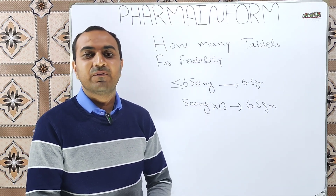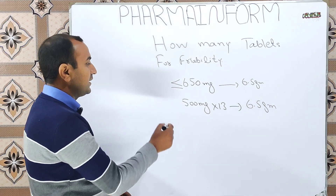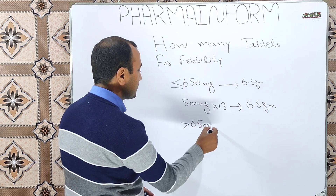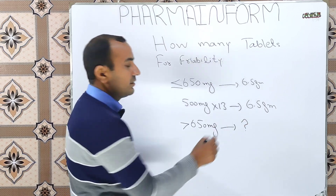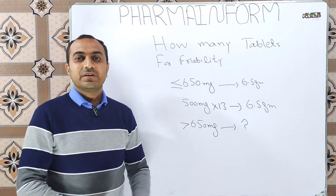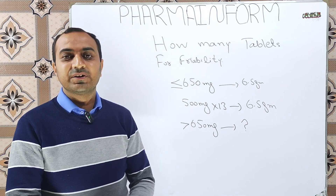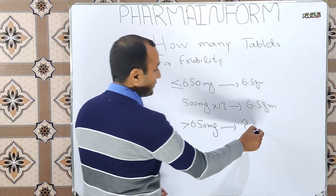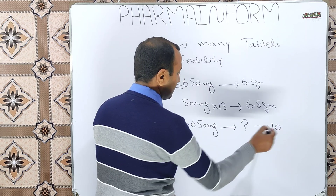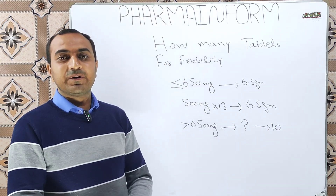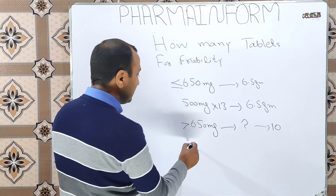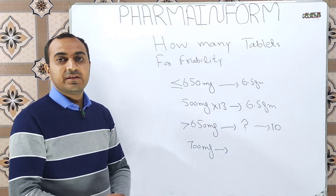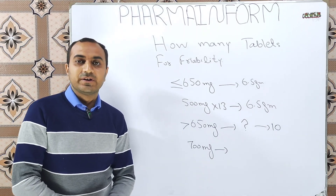The next specification is: if our individual tablet weight is greater than 650 milligrams, then how many tablets do we take? If our individual tablet weight is greater than 650 milligrams, then we will take 10 tablets. For example, if our individual tablet compression weight is 700 milligrams, then we will take 10 tablets for the friability test.